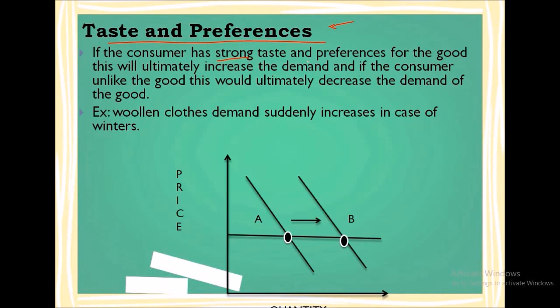If the consumer has strong taste and preferences for the goods, he will ultimately increase the demand. And if the consumer dislikes the goods, ultimately there will be a decrease in demand. Now here we have an example - woolen clothes demand suddenly increases in case of winters.